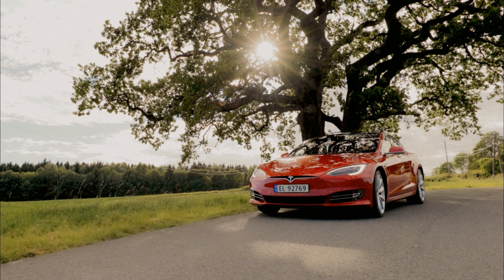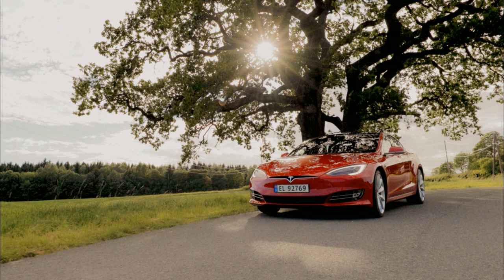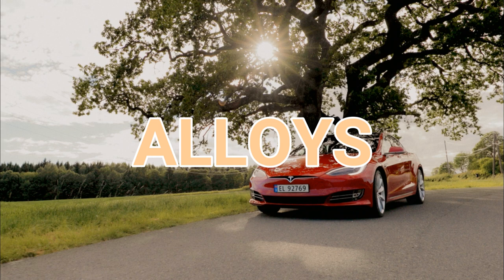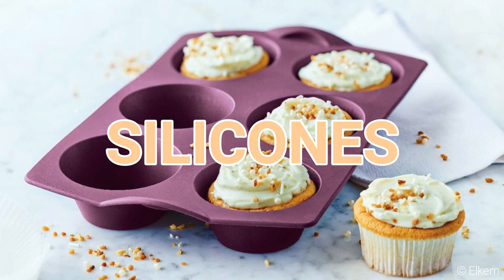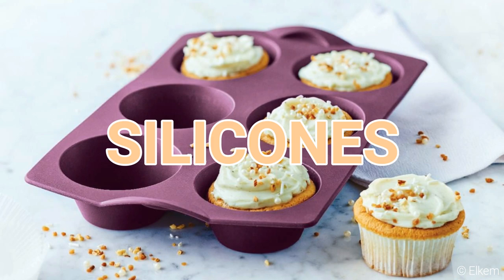The next category is aluminium alloys. Silicon is added as an alloying element to aluminium to enhance the properties of the alloy. The last category is the increasing use of silicon to produce silicones. Silicones have numerous uses, from baking products to stickers.